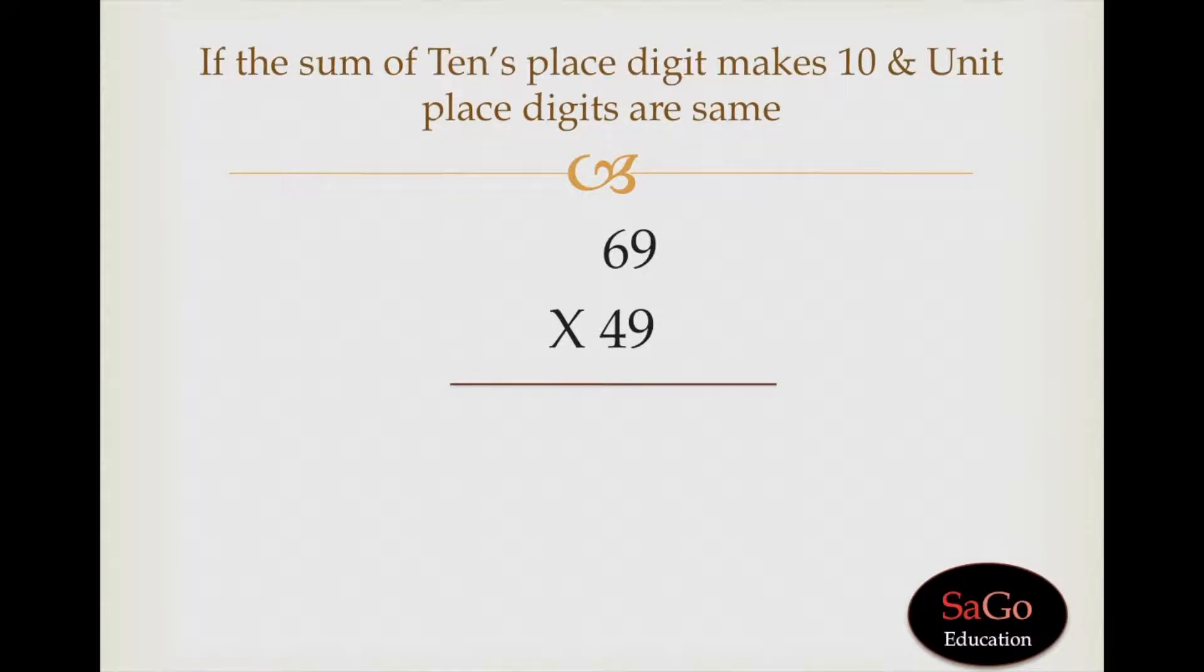Let's apply the trick. First of all we need to multiply tens place digits with each other and we'll add 9 in it because 9 is the ones place digit in both the digits, be it 69 or 49. So let's multiply 6 into 4 plus 9, it will give us 33.